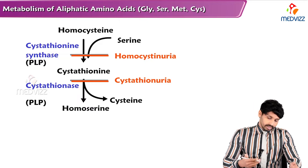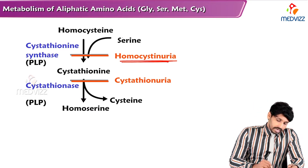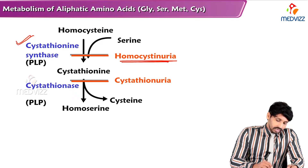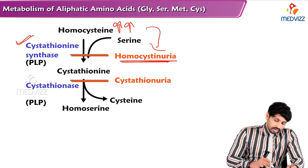In summary, serine cannot combine with homocysteine because of cystathionine synthase deficiency, leading to high levels of homocysteine and the condition homocysteinuria.